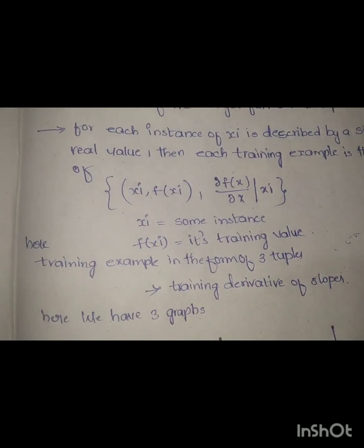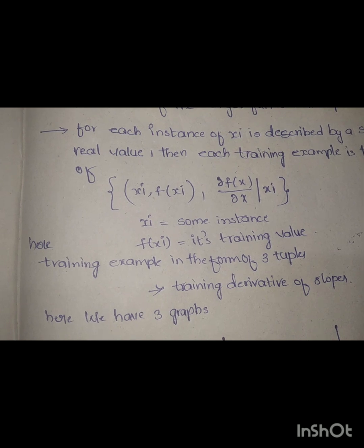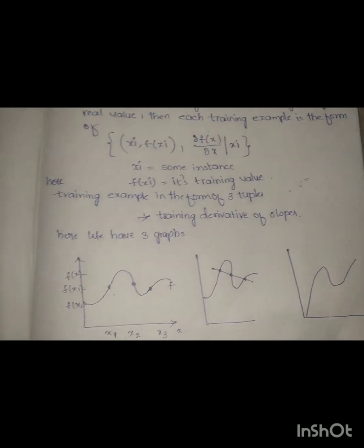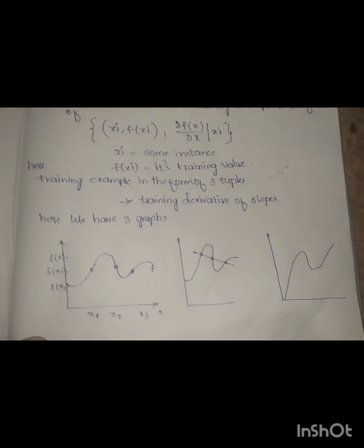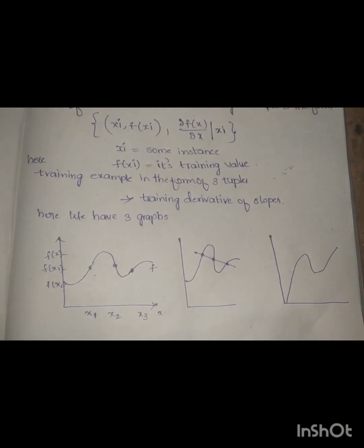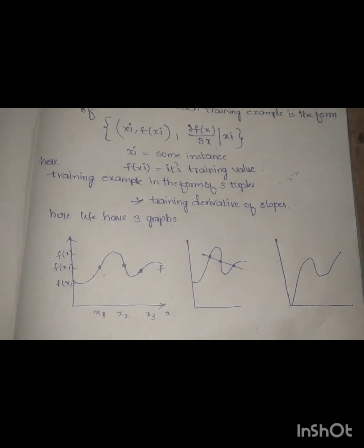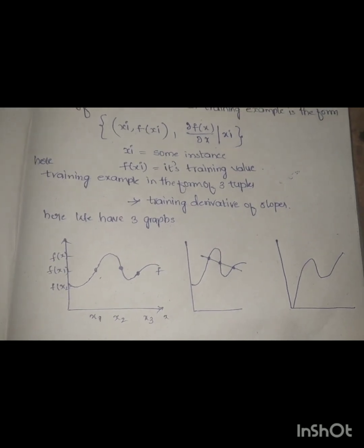For the tangent prop algorithm, we have three graphs. One is shown below with x1, x2, and x3. The y-axis is f of x. This represents both instance and real values, the training values.